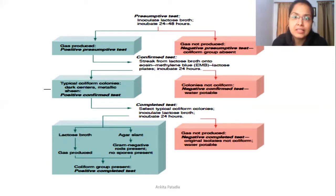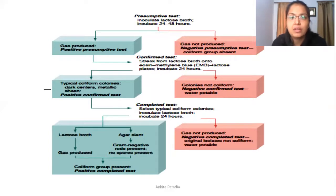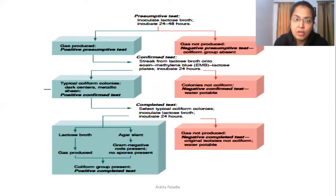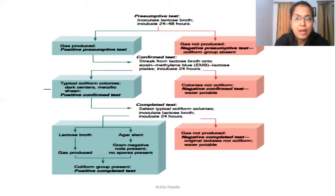To summarize the flowchart: in the presumptive test, if gas is produced the result is positive; if no gas is produced it is negative. If positive, proceed to the confirmed test by inoculating EMB agar, which is a differential and selective medium allowing only gram-negative bacteria. If typical dark-centered greenish metallic sheen colonies are observed, the confirmed test is positive; otherwise it is negative for coliform. From those colonies, the completed test is performed using nutrient lactose broth — showing acid and gas production — and nutrient agar slant for gram staining, confirming gram-negative non-spore-forming rod morphology.